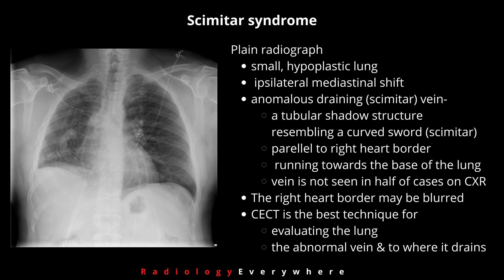When considering radiological imaging, you can see the following changes on plain X-rays: small hypoplastic lung with ipsilateral mediastinal shift. The main finding is the anomalous draining Scimitar vein, which is a tubular shadow structure resembling a curved sword of Turkey — called a Scimitar — parallel to the right heart border and running towards the base of the lung.